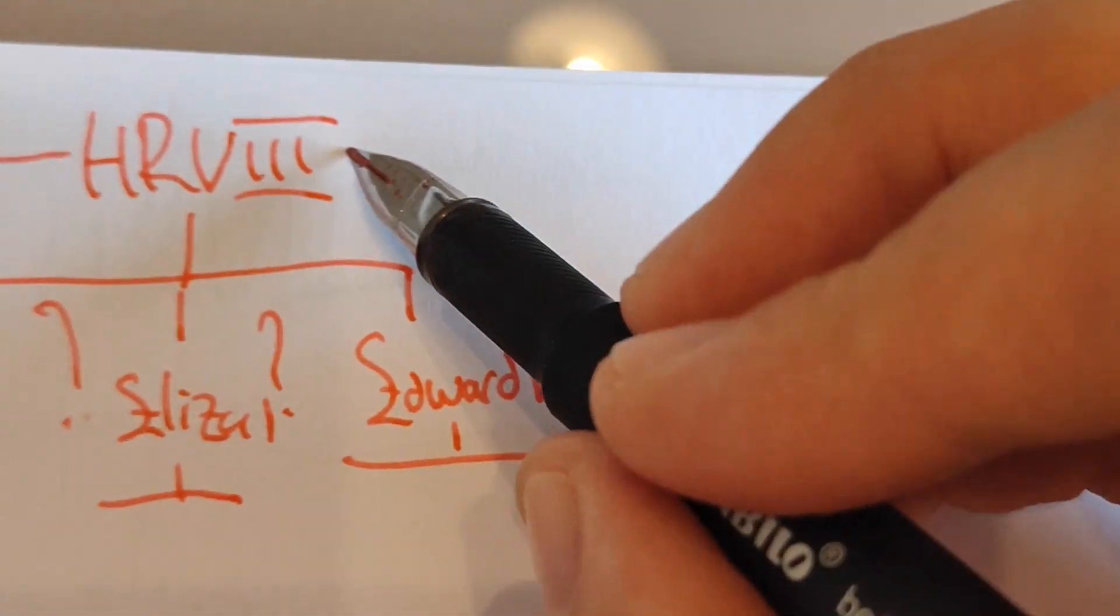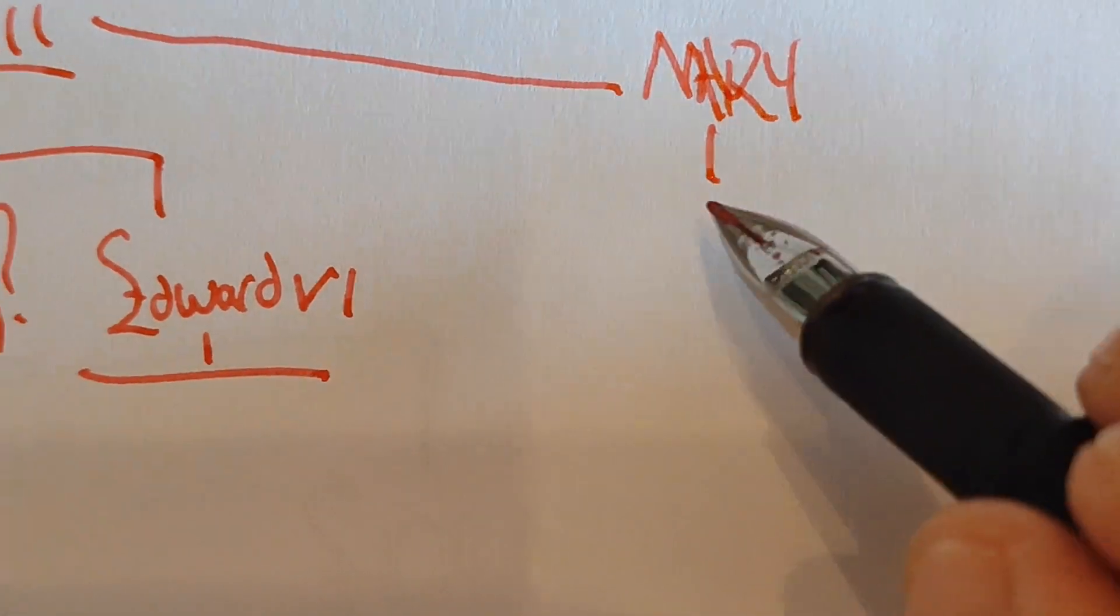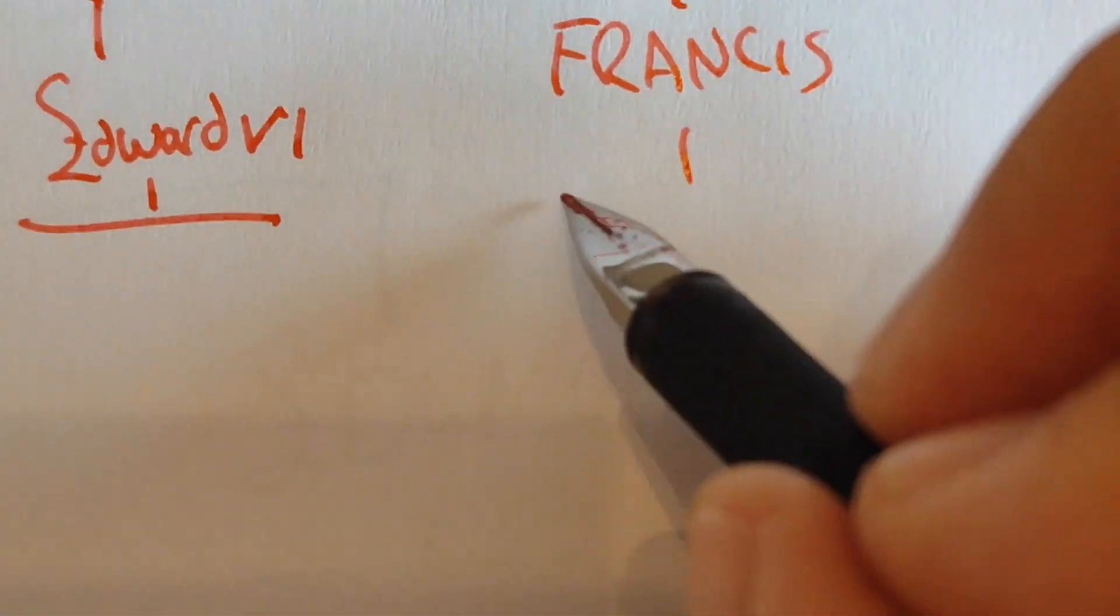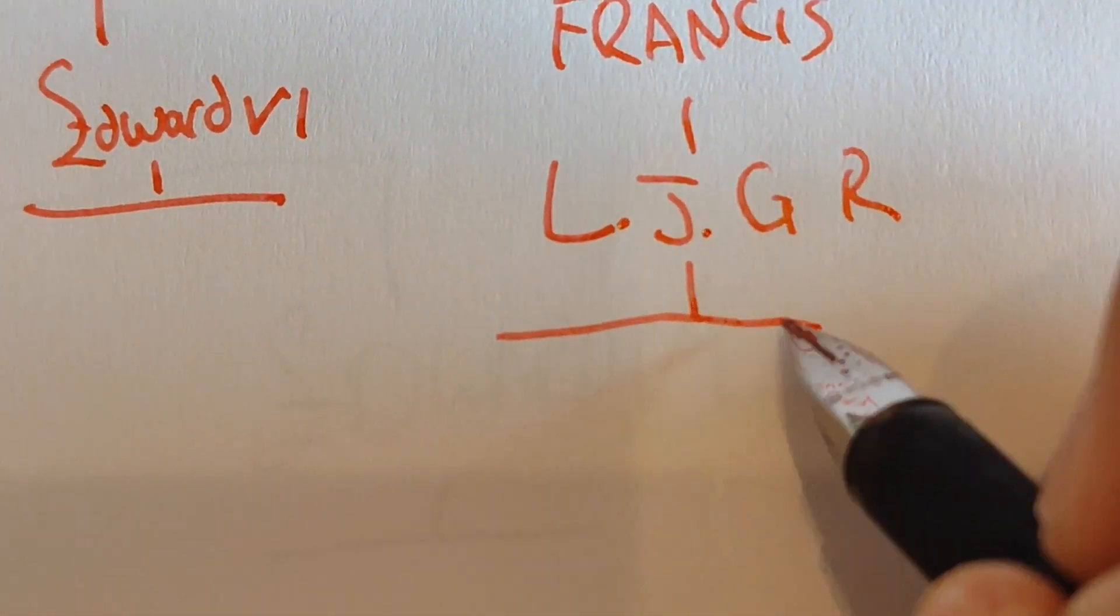Now, over here on the other side, we have Henry VIII's other sister called Mary, who had a daughter called Frances, who had another daughter called Lady Jane Grey, who was considered Queen of England for just nine days before her cousin Mary I beheaded her.